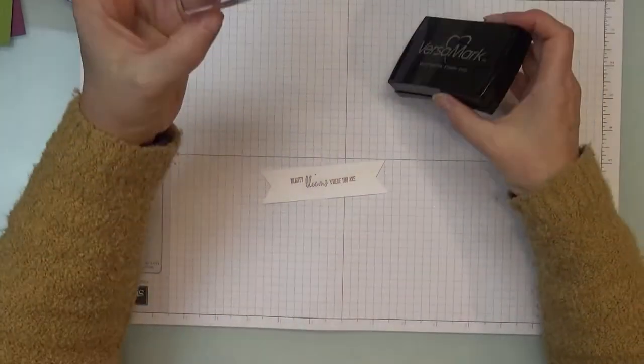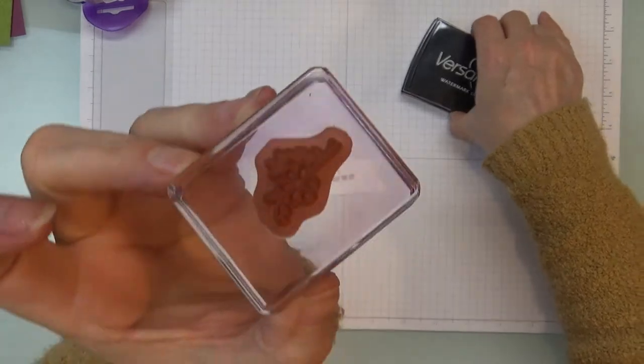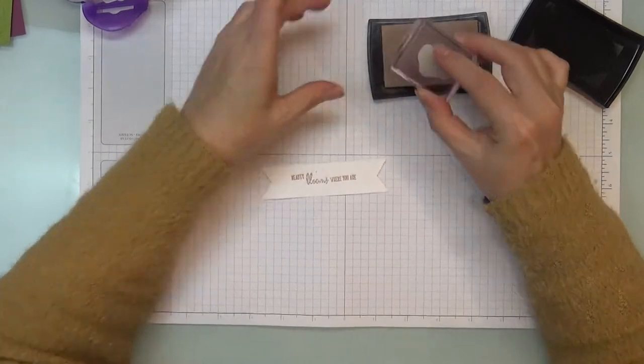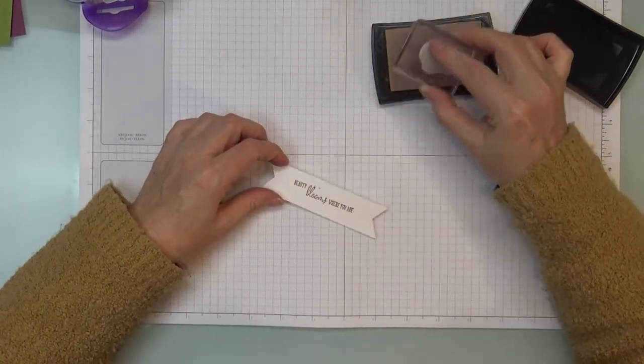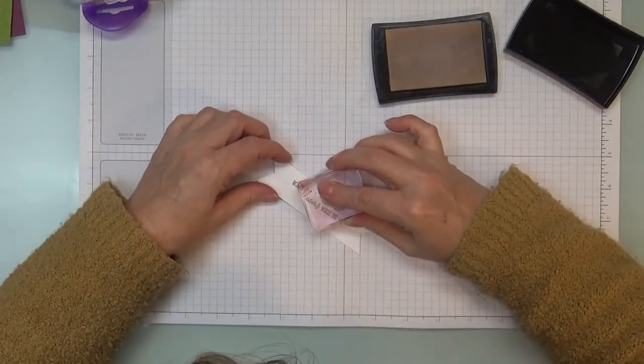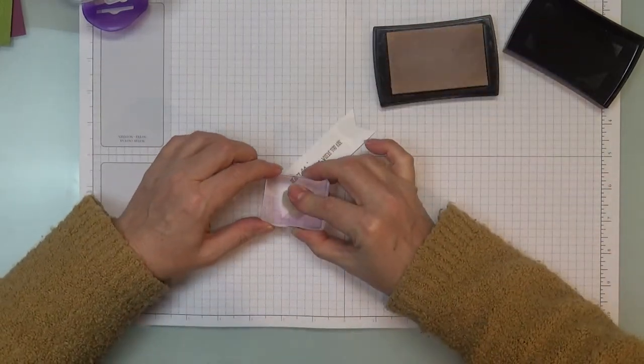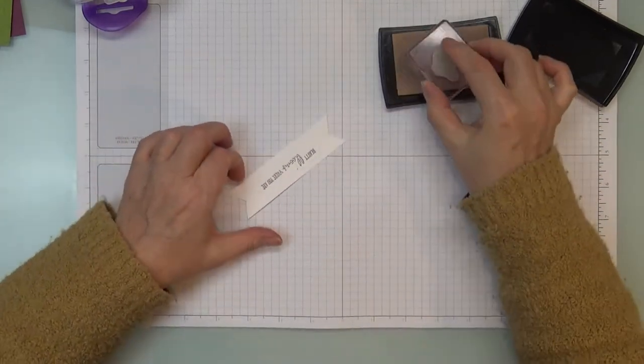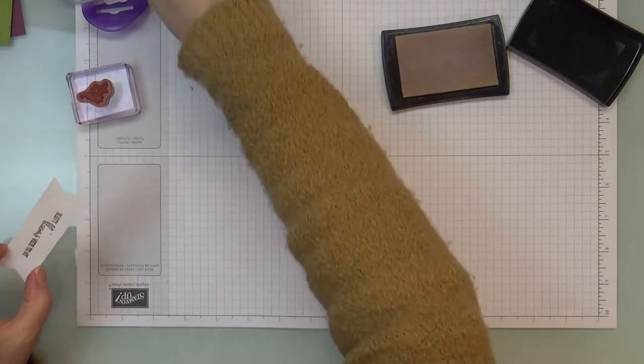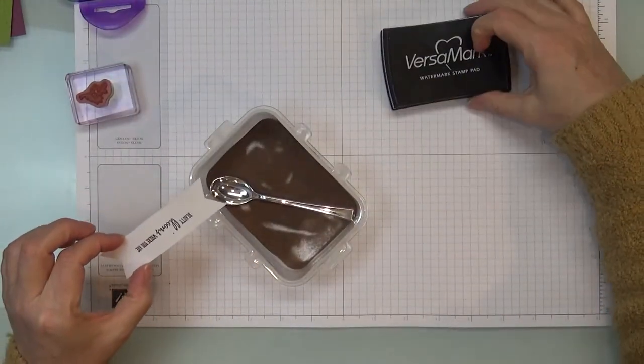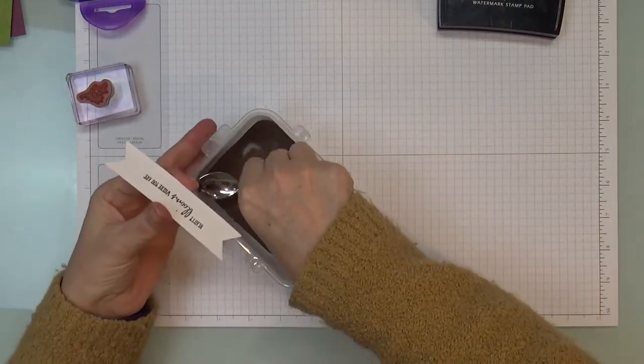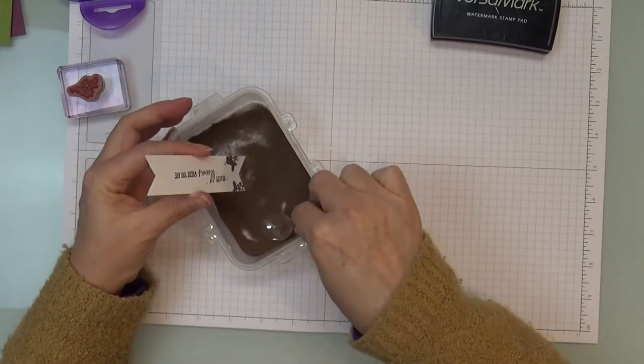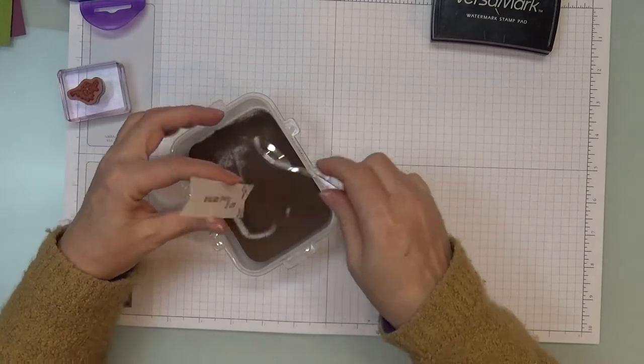Now, I'm going to take this little flower that comes with the stamp set. And I'm going to ink it up and just randomly, and I'm not going to do it in too many places. Just like maybe four spots or so. We can always go back in if we want to.